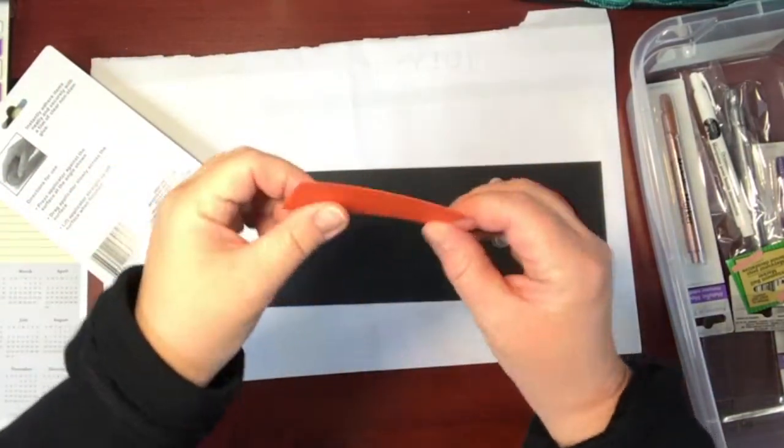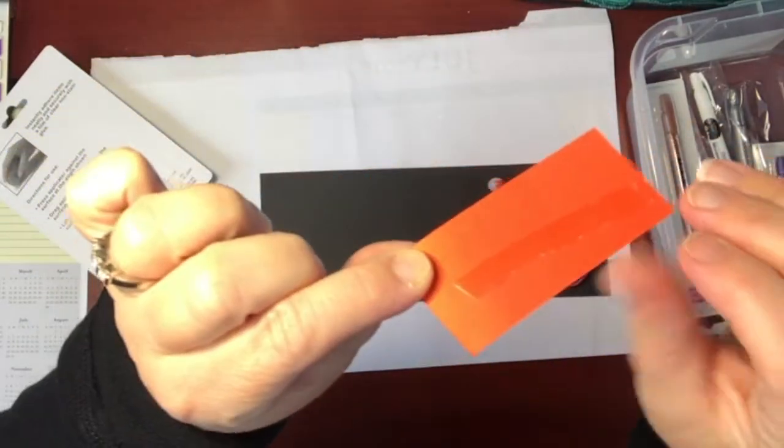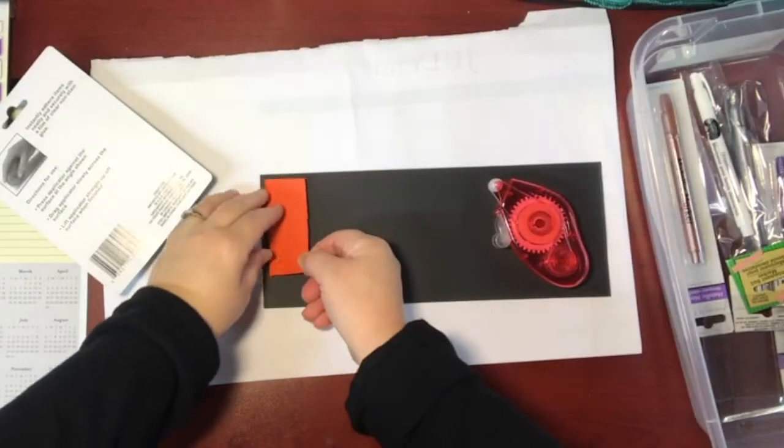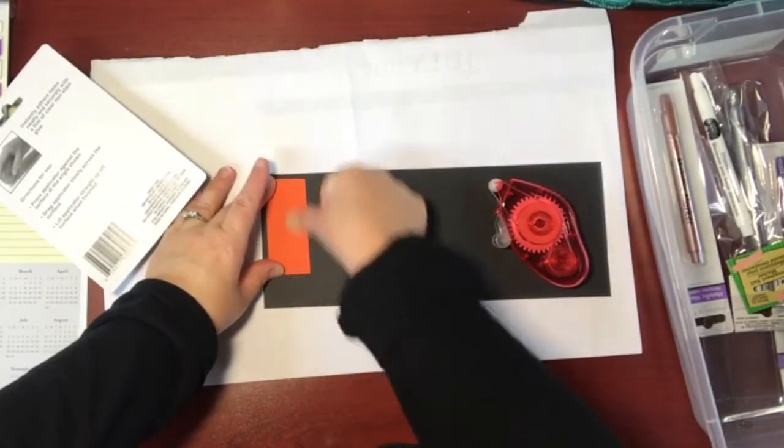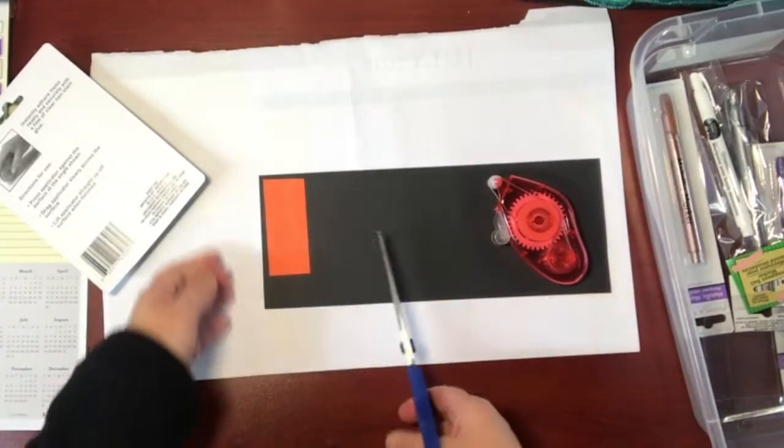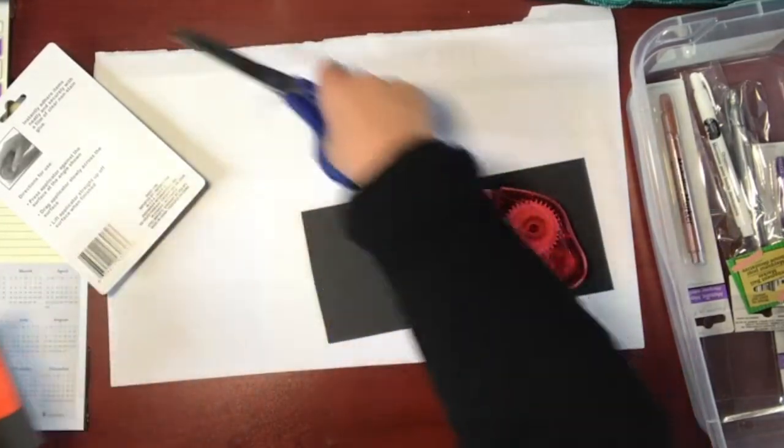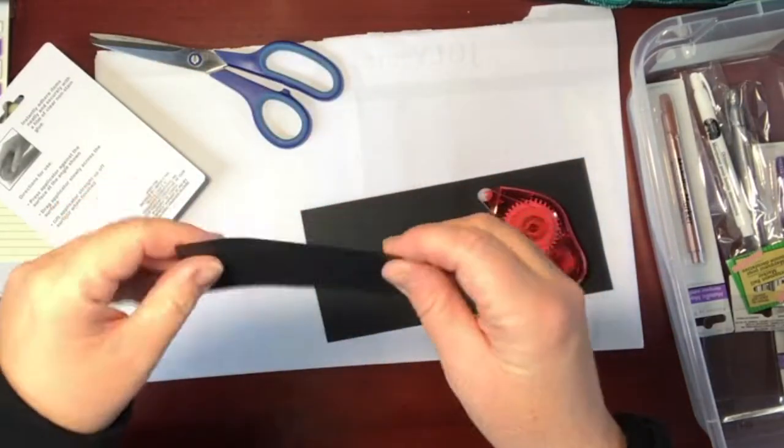So as you can see I got the double sided tape here and I'm just going to apply it to this piece of black cardstock. Again I'll cut this big piece because we don't need the whole thing and I want to use the rest of it for another product review. So here we go.